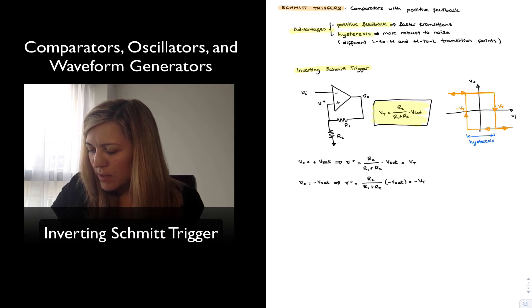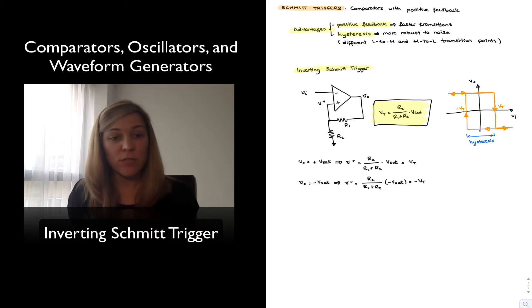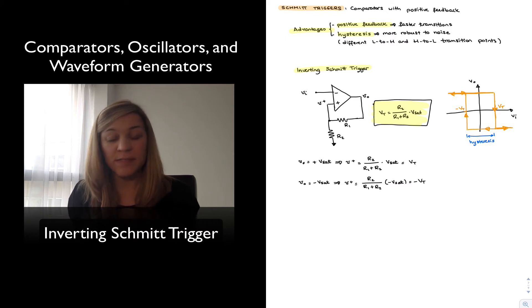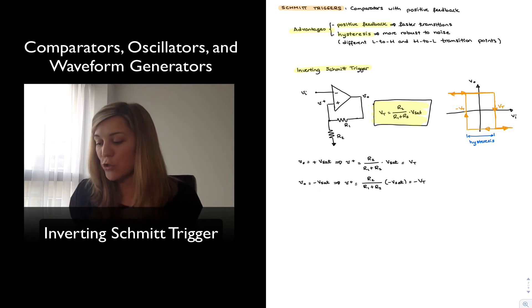In this case, the amount of hysteresis will be equal to 2 times Vt, and notice that it is programmable. We can program it by selecting adequate values for R1 and R2.